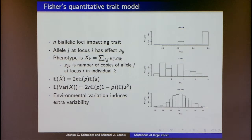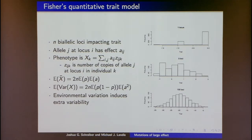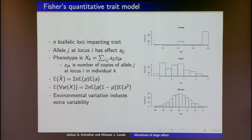All of this is in the context of the model proposed by Fisher, back when the biometricians and Mendelians didn't know they were talking about the same thing. The idea is you have N biallelic loci. In this simple additive model, allele J at locus I has some effect on the trait, and your phenotype is just the sum over all loci and all alleles — you take the effect of the allele you have at each locus.